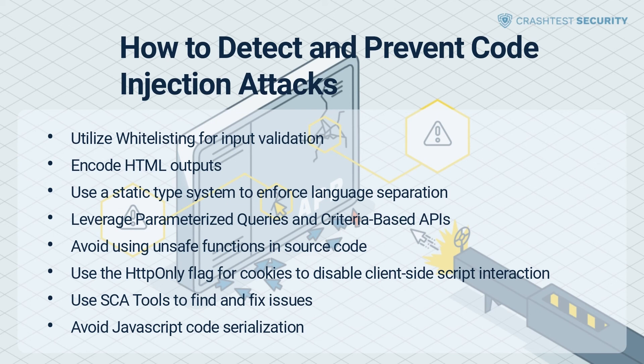Avoid using unsafe functions in source code. Avoiding all vulnerable code evaluation constructs when developing source code is essential. Developers should instead use secure, dedicated language-specific features to process user-supplied inputs. Use the HttpOnly flag for cookies to disable client-side script interaction. If the server sets the HttpOnly flag on every cookie it creates, it indicates that the cookie should not be accessible from the client-side. Even with HTML injection flaws, the cookies cannot be revealed to third parties.